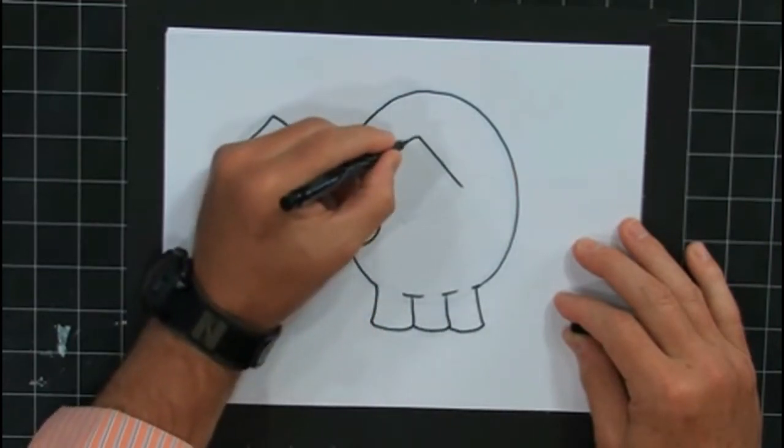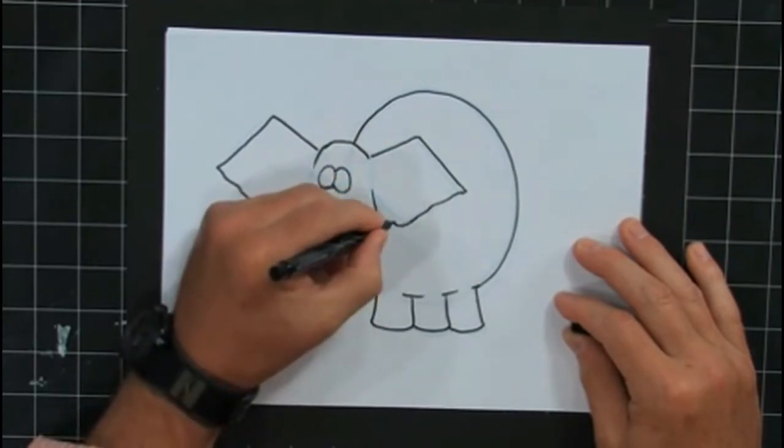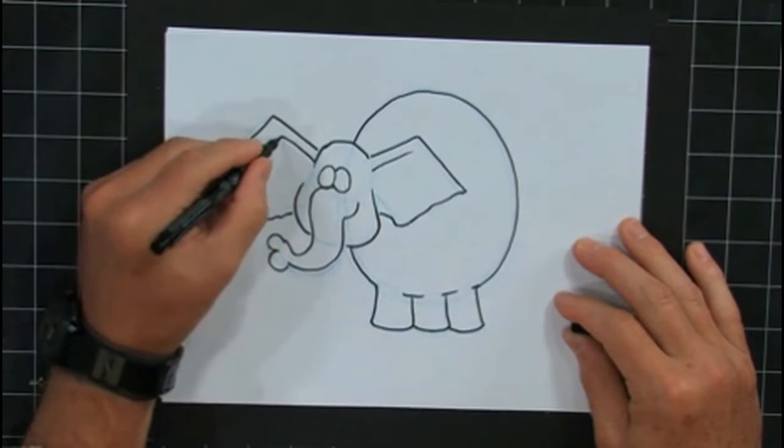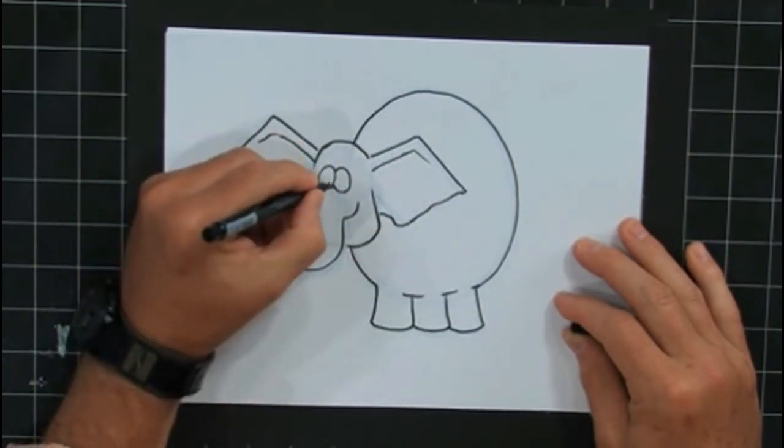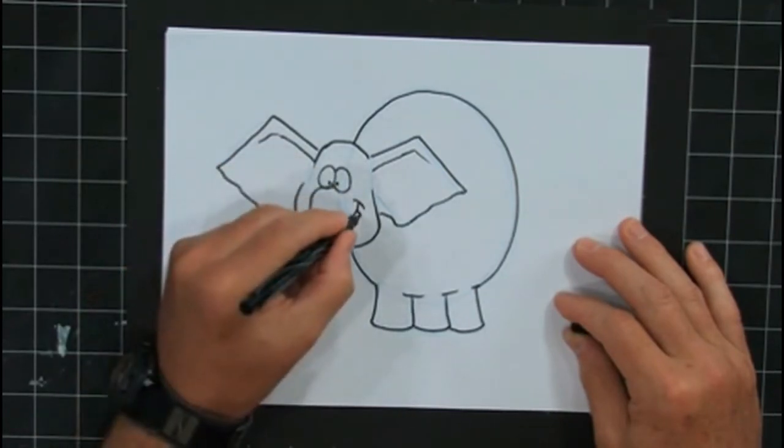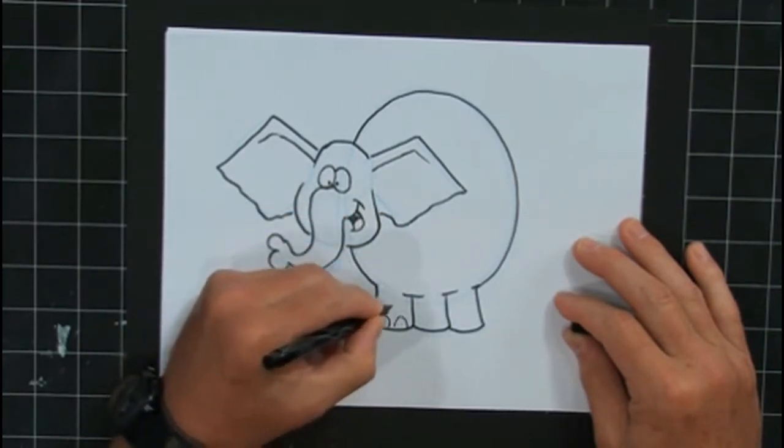Okay. And this one, his ear here is the other diamond that we had. Now you can see he's starting to come to life. Okay. There's his feet.